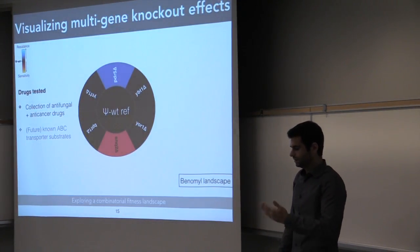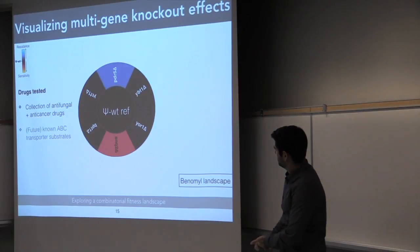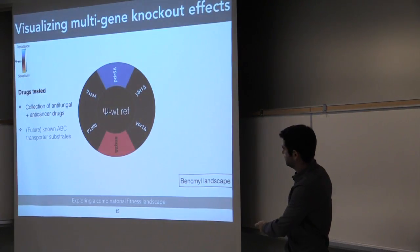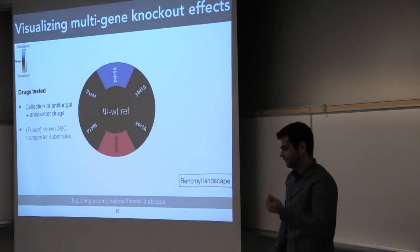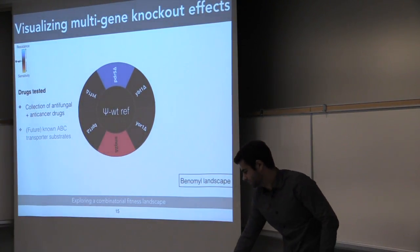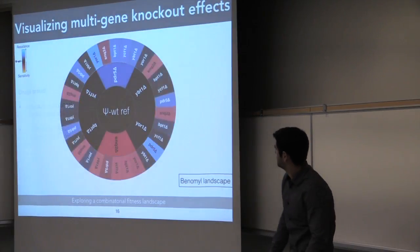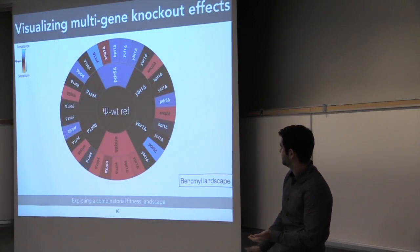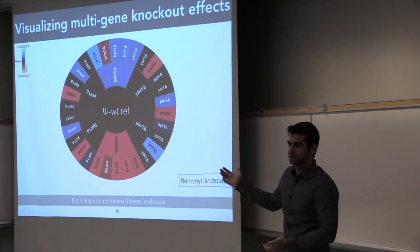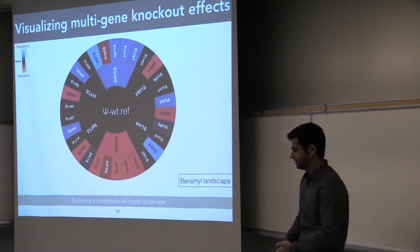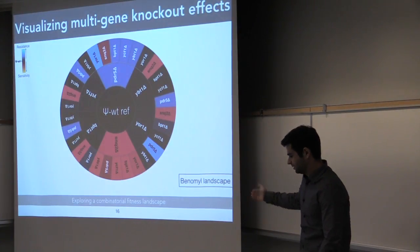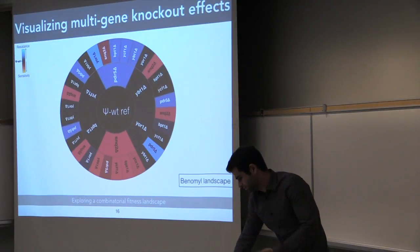If it makes you more resistant, it's colored in blue. So what you see here is that an SNQ2 knockout makes you more sensitive to Venomil, whereas surprisingly, but already known, PDR5-delete makes you more resistant. And you can expand this analogy to look at two knockout combinations, so you can see that a PDR5-SNQ1 double knockout is even more resistant,